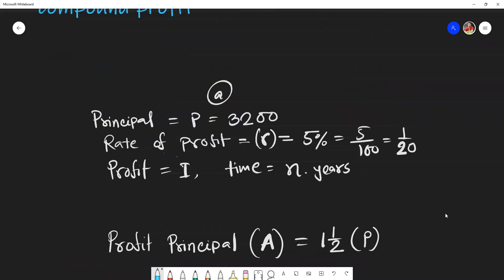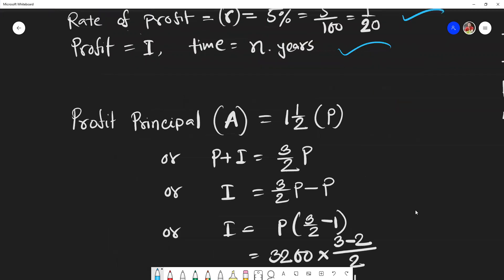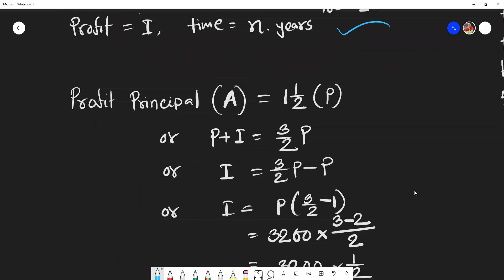First question: Information - principal means Fabiha's amount is 3,200 taka. The rate of profit or rate of interest is 5%, which means 1/20. And profit time is n years. So this question asks when profit equals principal.